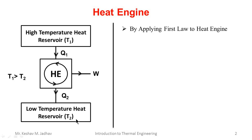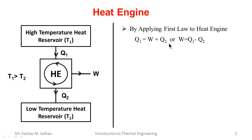We can apply the first law of thermodynamics to this heat engine. According to the first law of thermodynamics for a cyclic device, the total amount of energy entering into the system is equal to total energy leaving the system. So here total energy coming into the system is Q1, and energy leaving the system is W and Q2. So according to the first law, Q1 is equal to W plus Q2, or we can rewrite as W is equal to Q1 minus Q2.